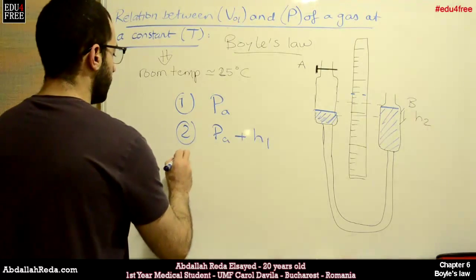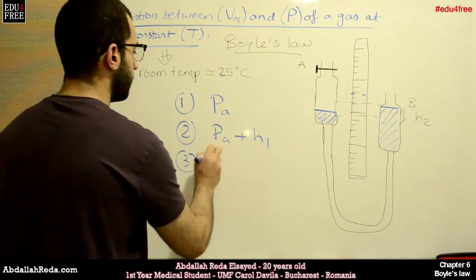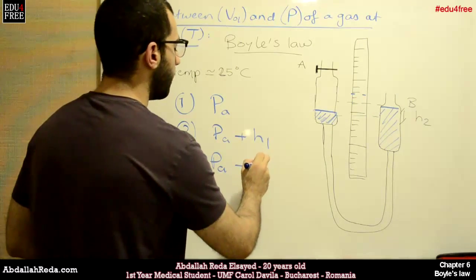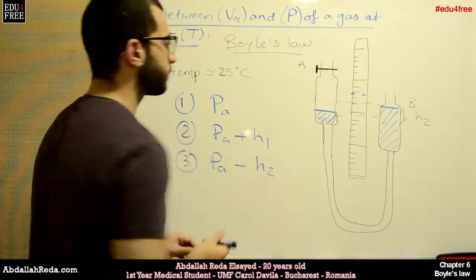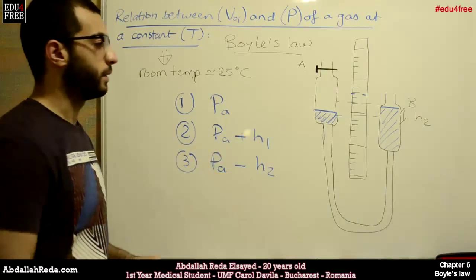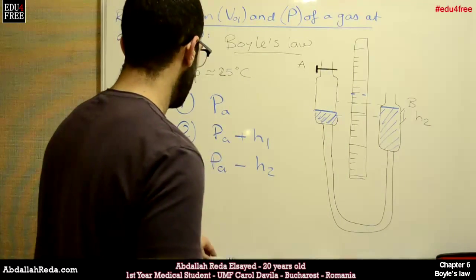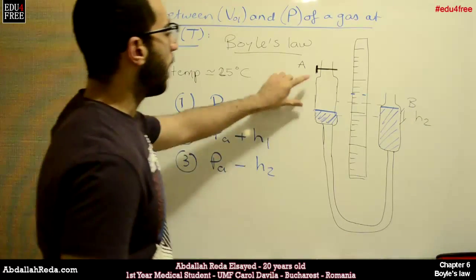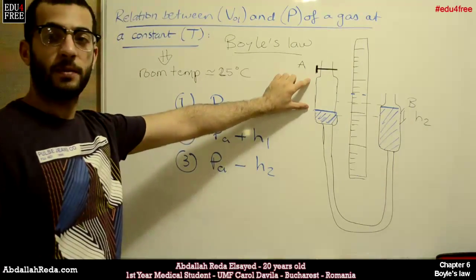So step 3 equals, the pressure will equal PA, but at this time, it's minus H2. Because we lowered the burette B. And, obviously, the volume of the gas entrapped increased.